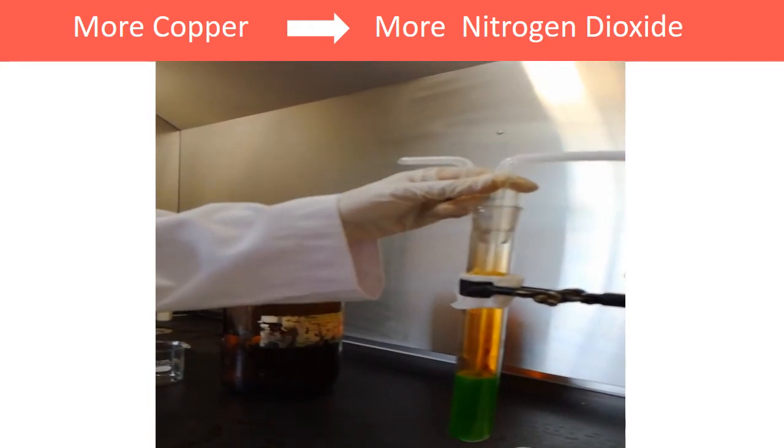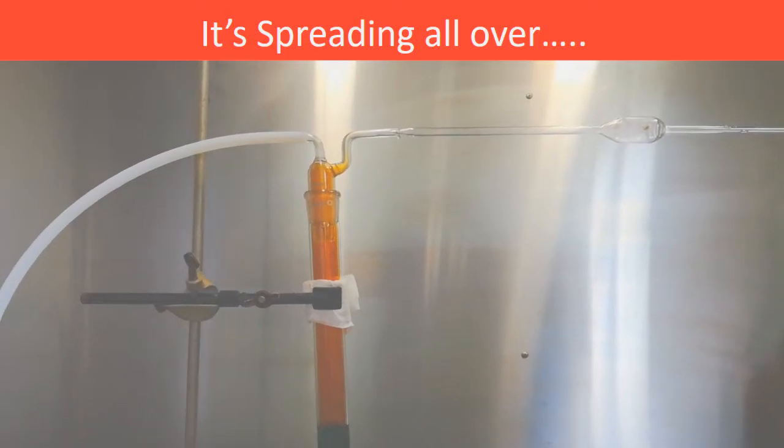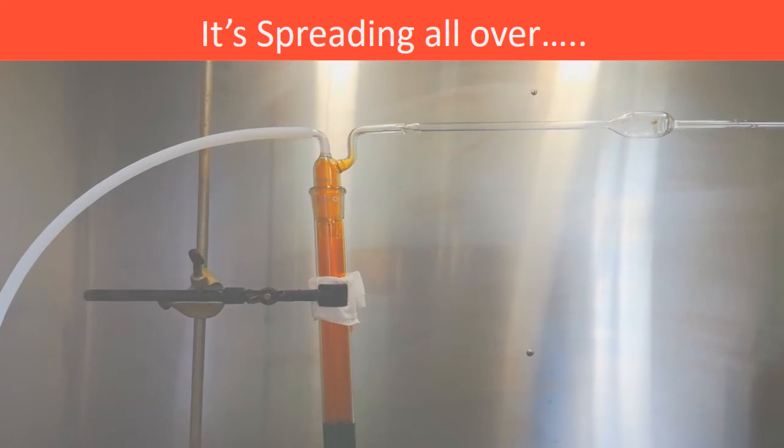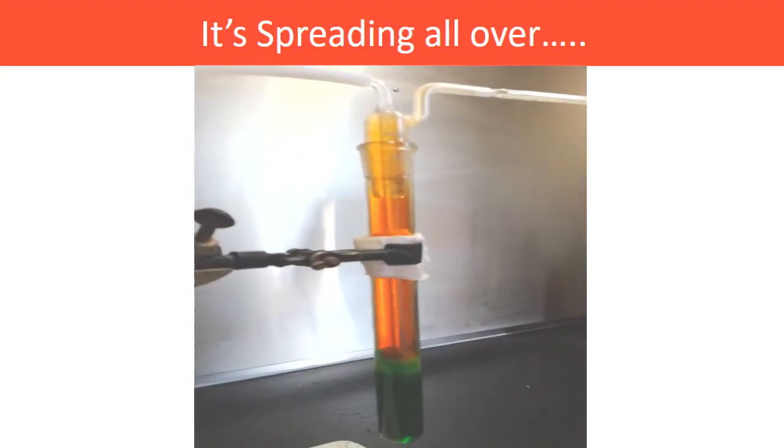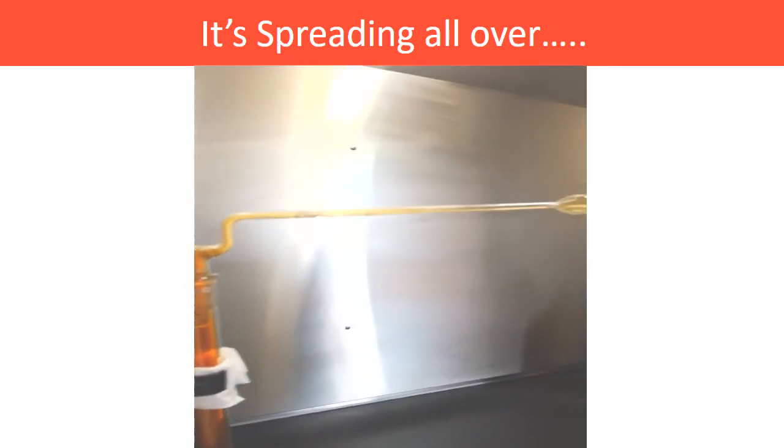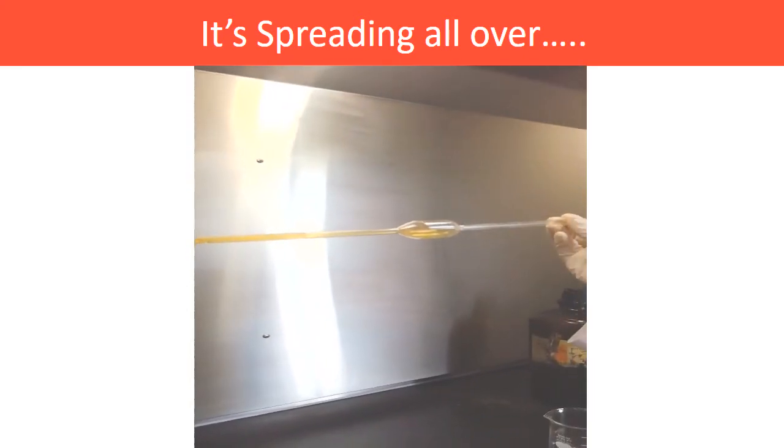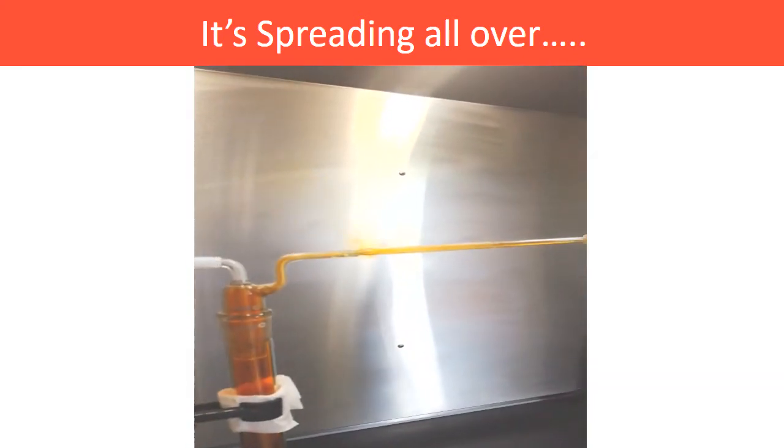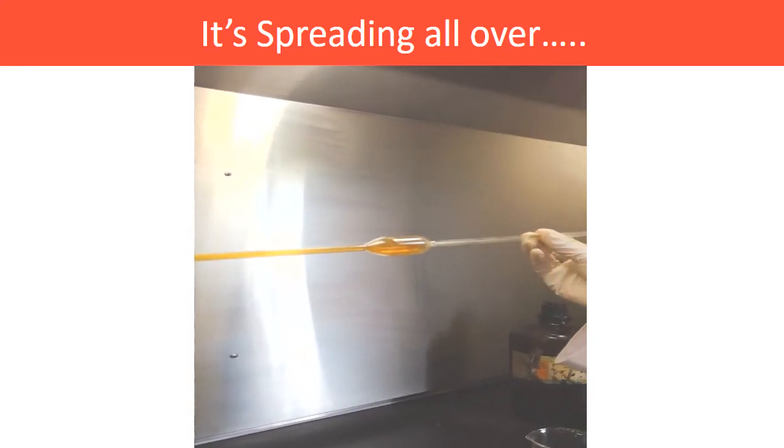Here we add some more copper pieces into the test tube in order to observe a faster mass transfer. Therefore, the gas is moving faster than before. We can observe that the nitrogen dioxide gas is moving throughout the entire test tube and it's spreading all over.